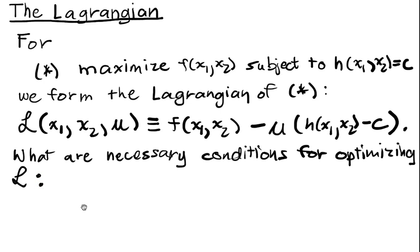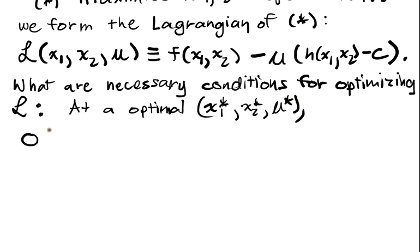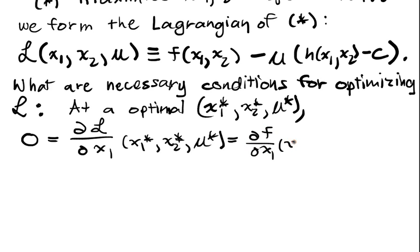Well, we have to have that all the partial derivatives of l are equal to zero at the maximum. So at an optimal point x1 star, x2 star, mu star, we have zero equals the partial of l with respect to x1, evaluated at x1 star, x2 star, mu star. But what's that equal to? Well, I just pass the partial into these guys. I get df dx1 of x1, x2, minus mu dh dx1 of x1, x2. Of course c was a constant here, and mu is constant with respect to x1.